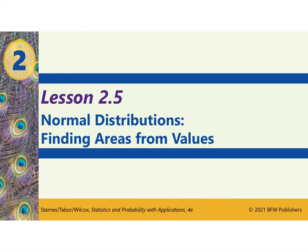Lesson 2.5 — we only have two more sections left in Chapter 2, which means a test is coming up soon. This section deals again with normal distributions. The 68-95-99.7 rule has not changed, and we'll use it to draw normal distributions. But what if we want the area or probability of something that doesn't fall directly on one of our standard deviations? So now what happens if it's asking for 1.25 standard deviations from the mean?